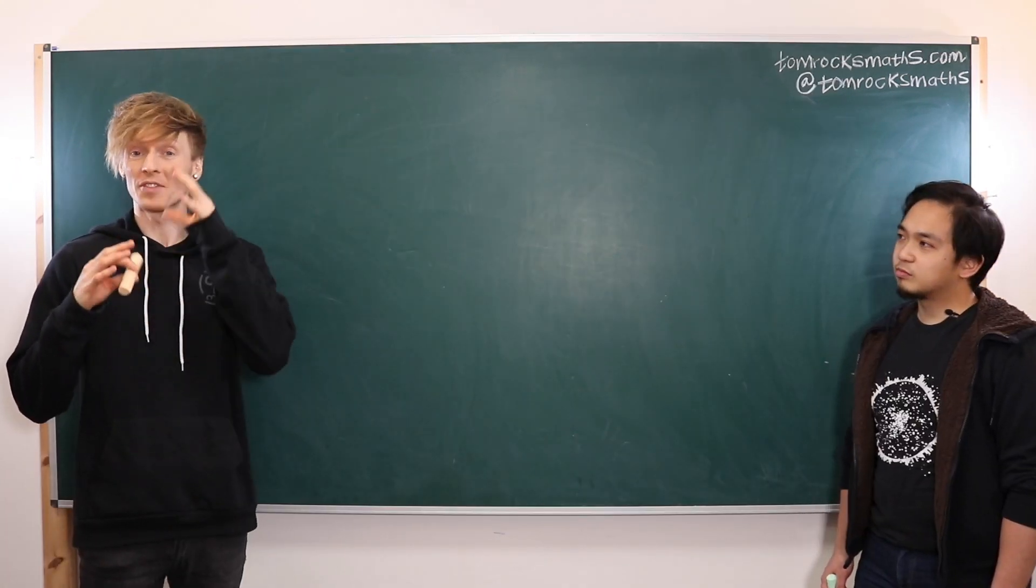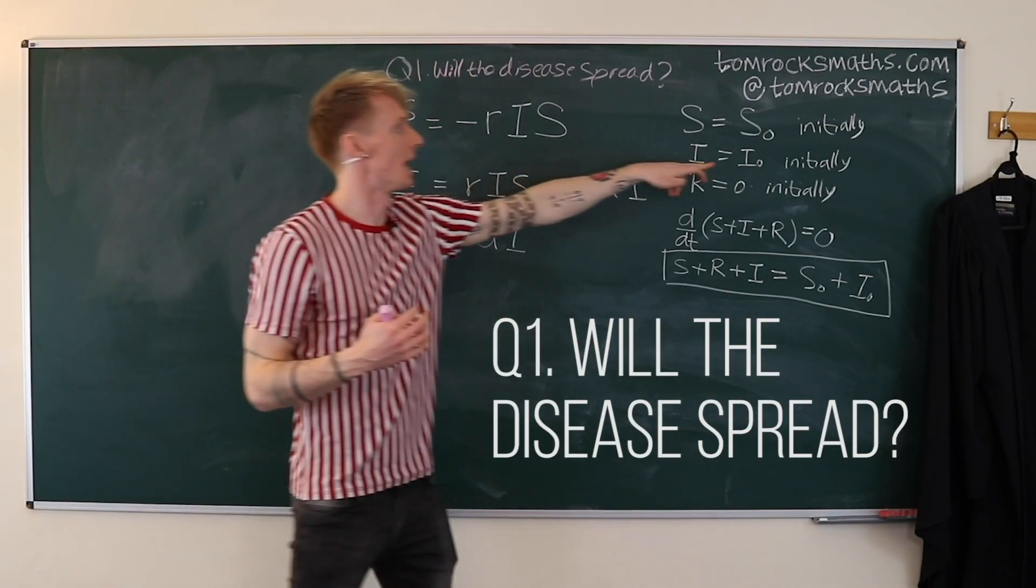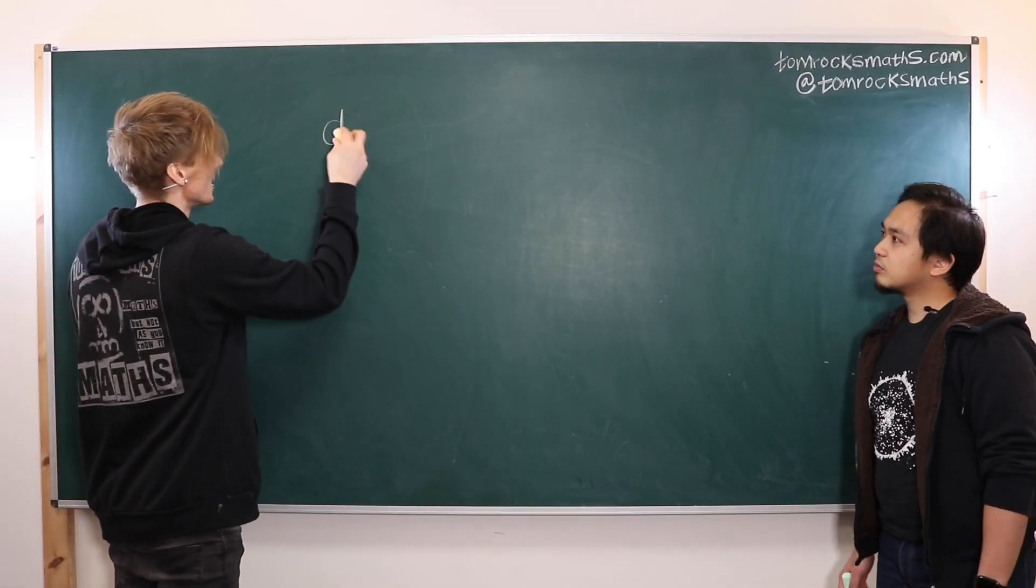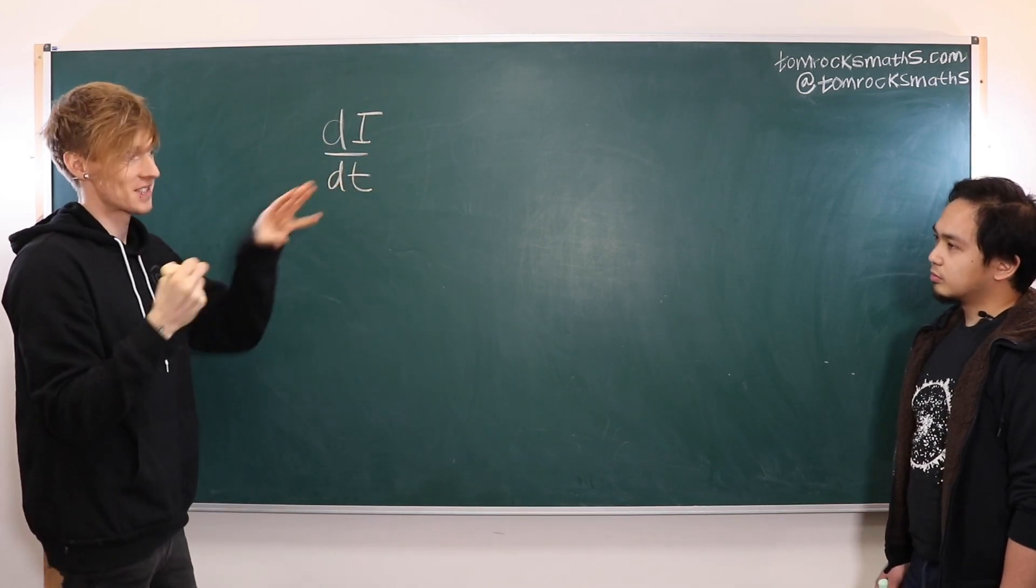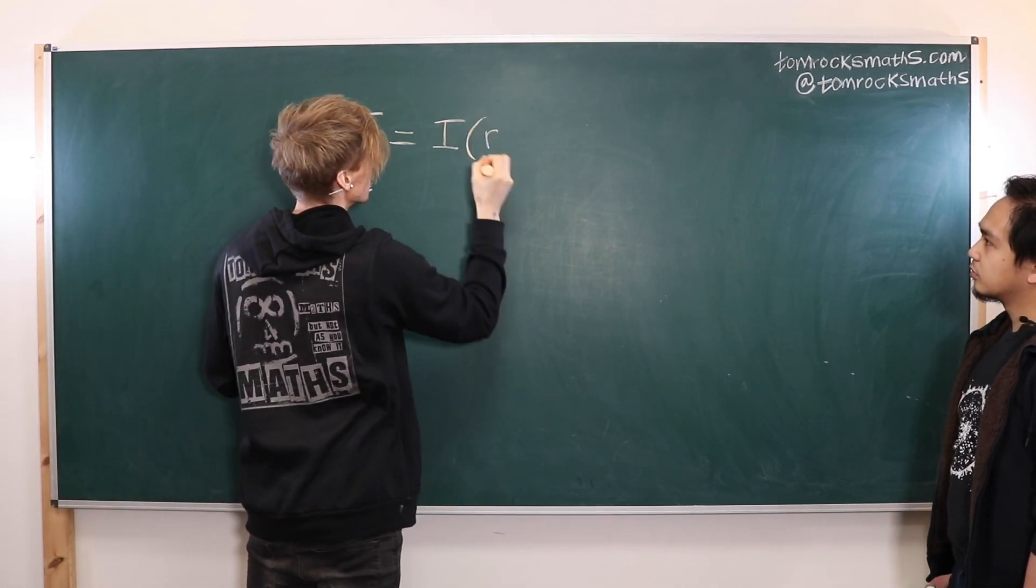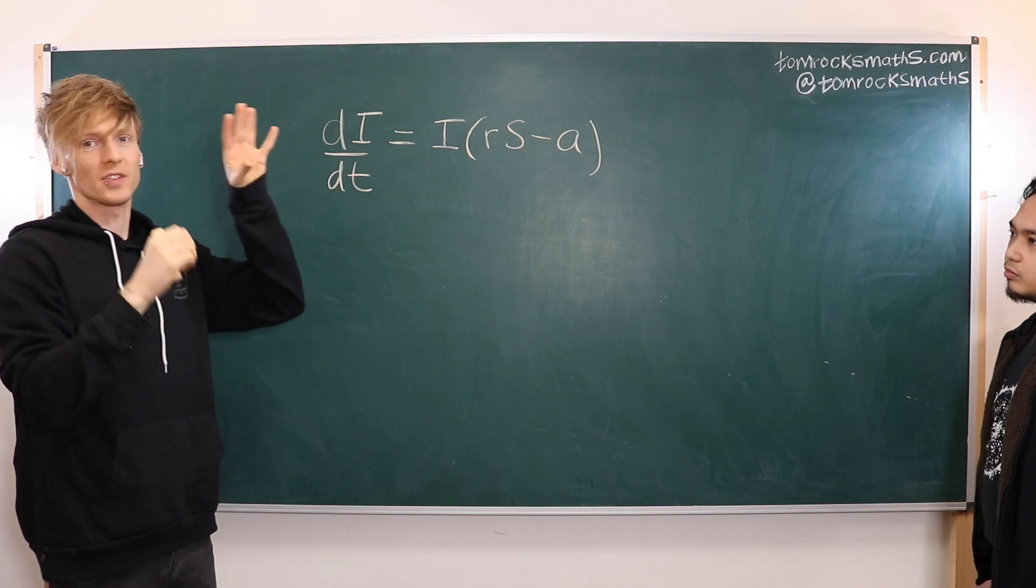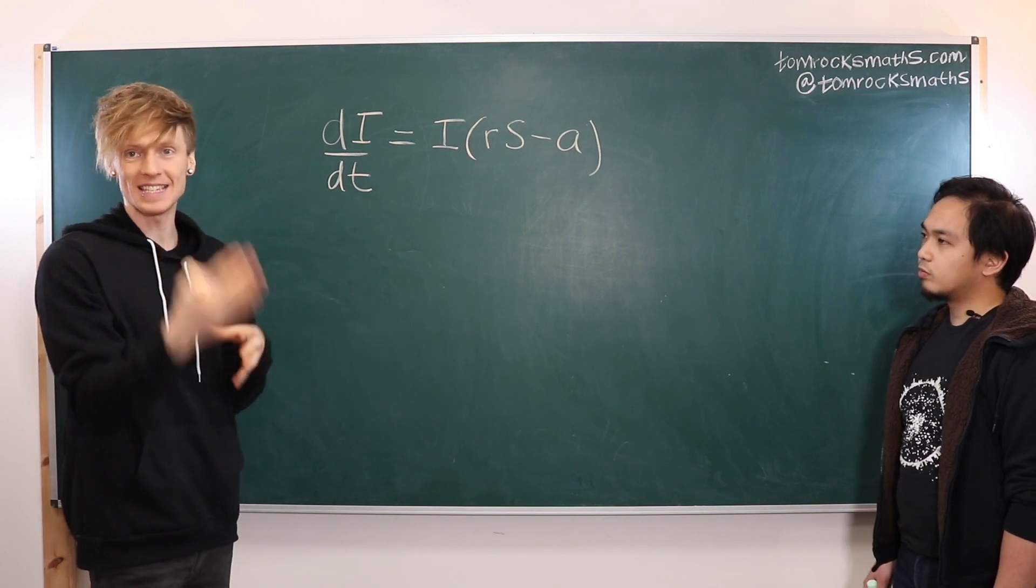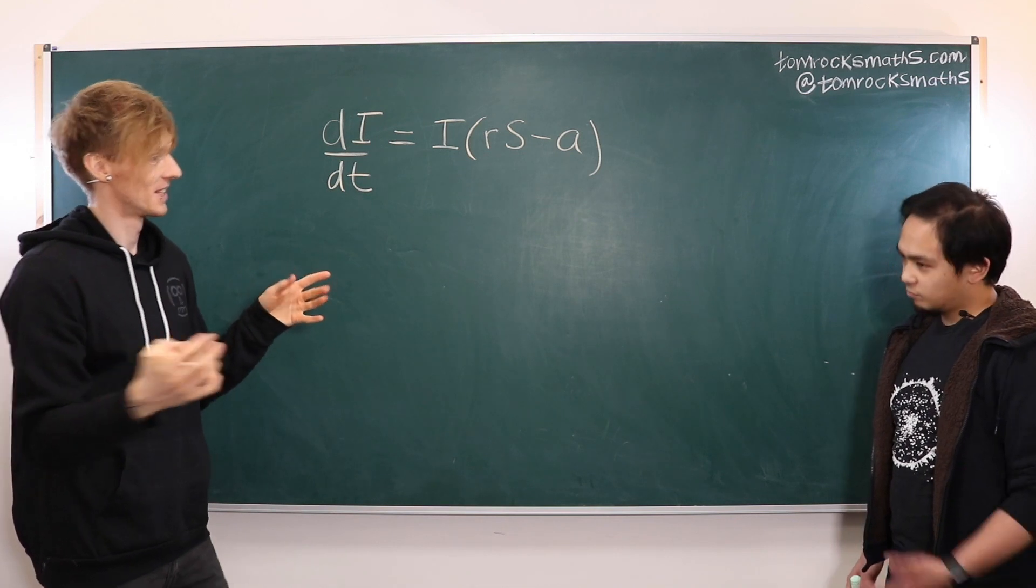So I actually looked at the first question Gabriel's mentioned about stopping the virus transmission in the first SIR model video. What we saw there was the di by dt equation, so the rate of change of number of infectives which we had was equal to this expression i times (rs minus a). We saw that for the transmission to stop this rate of change has to be negative so the number of people with the disease must be decreasing so it can go down to zero, pandemic stops. Sounds good.